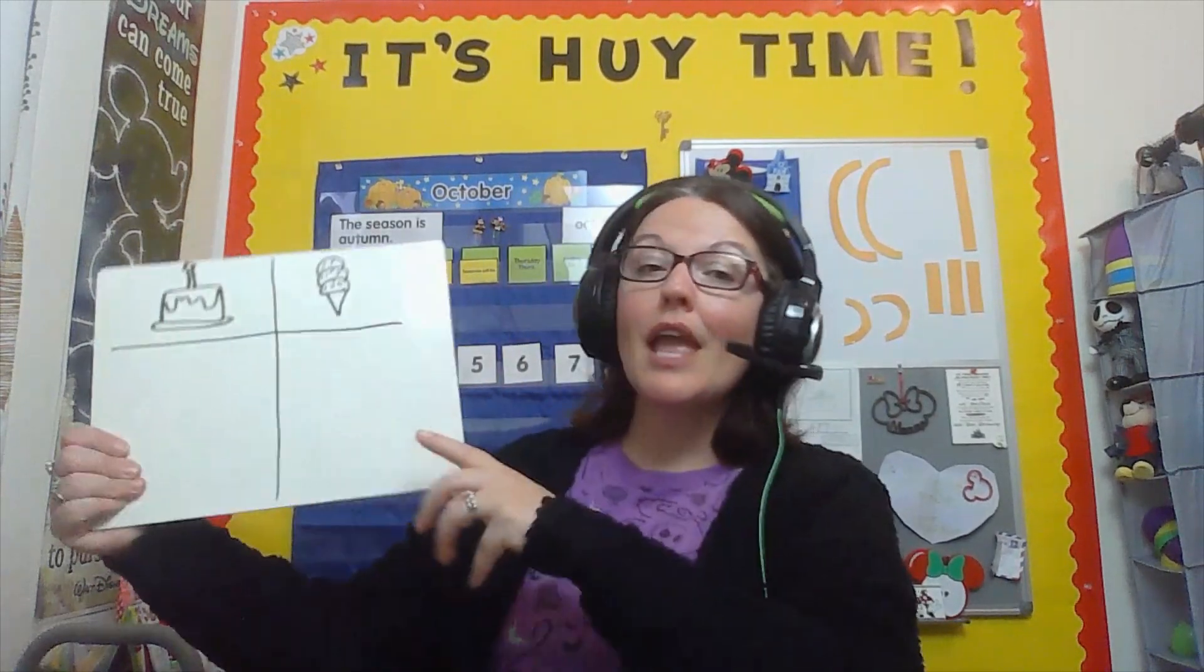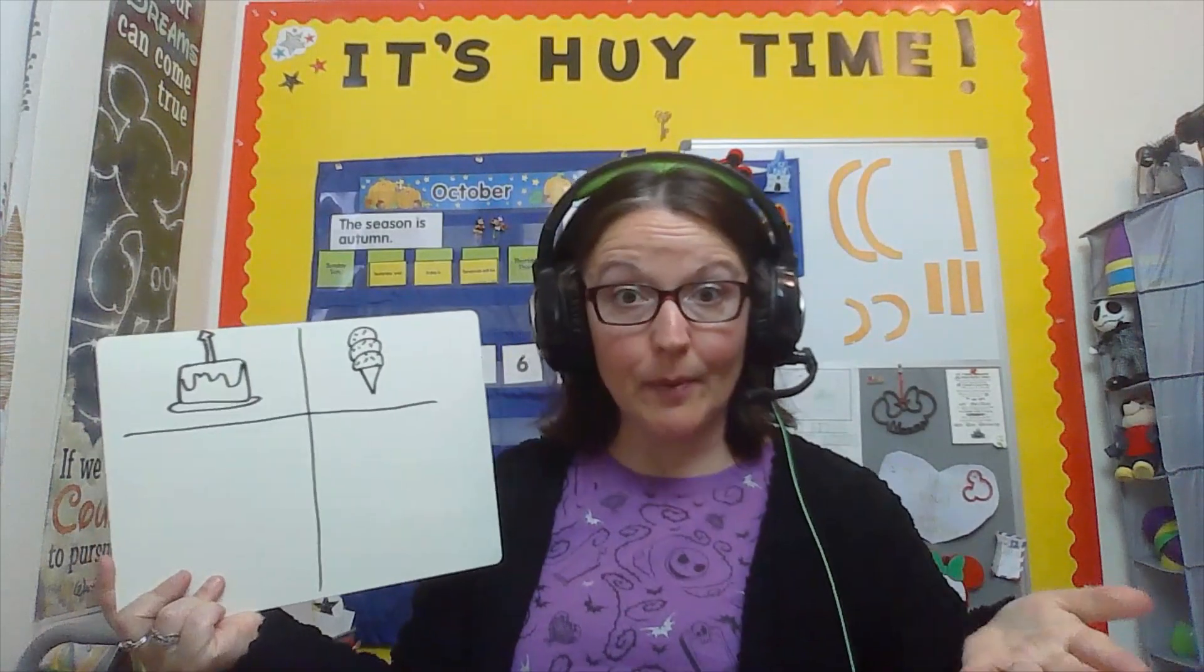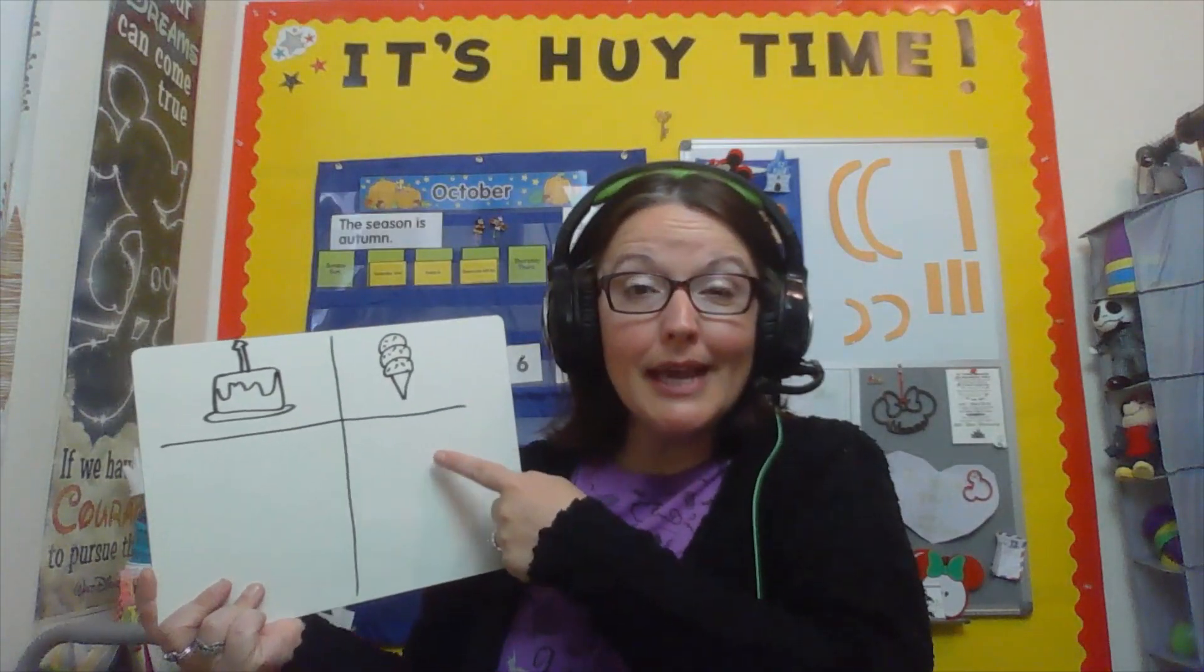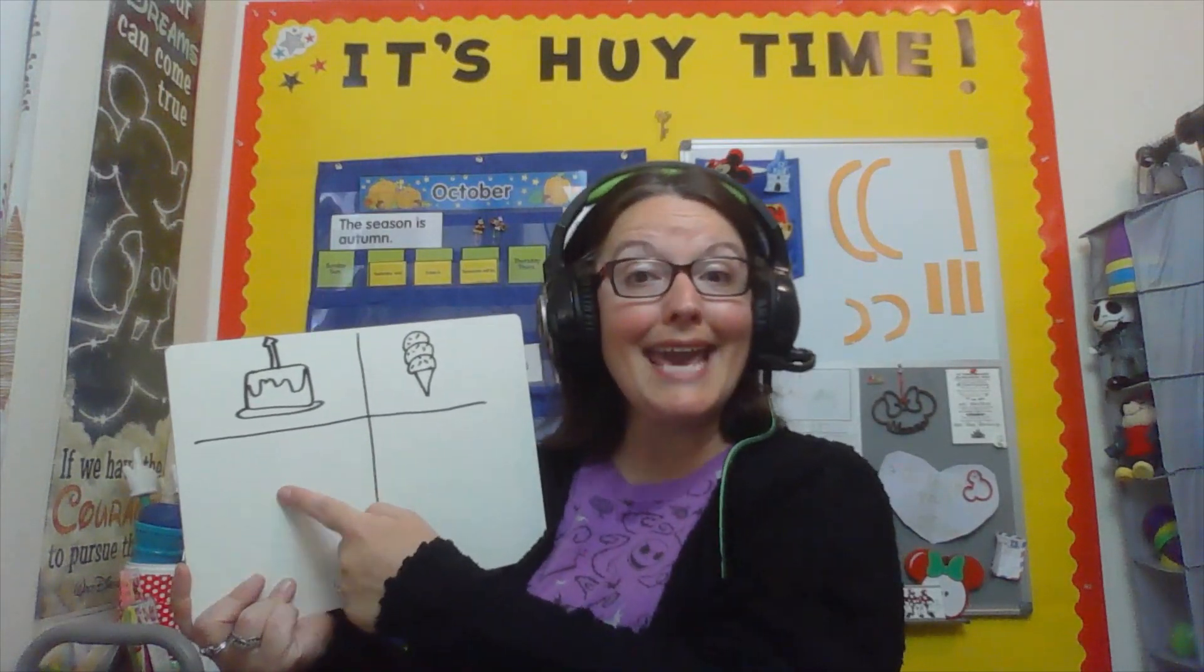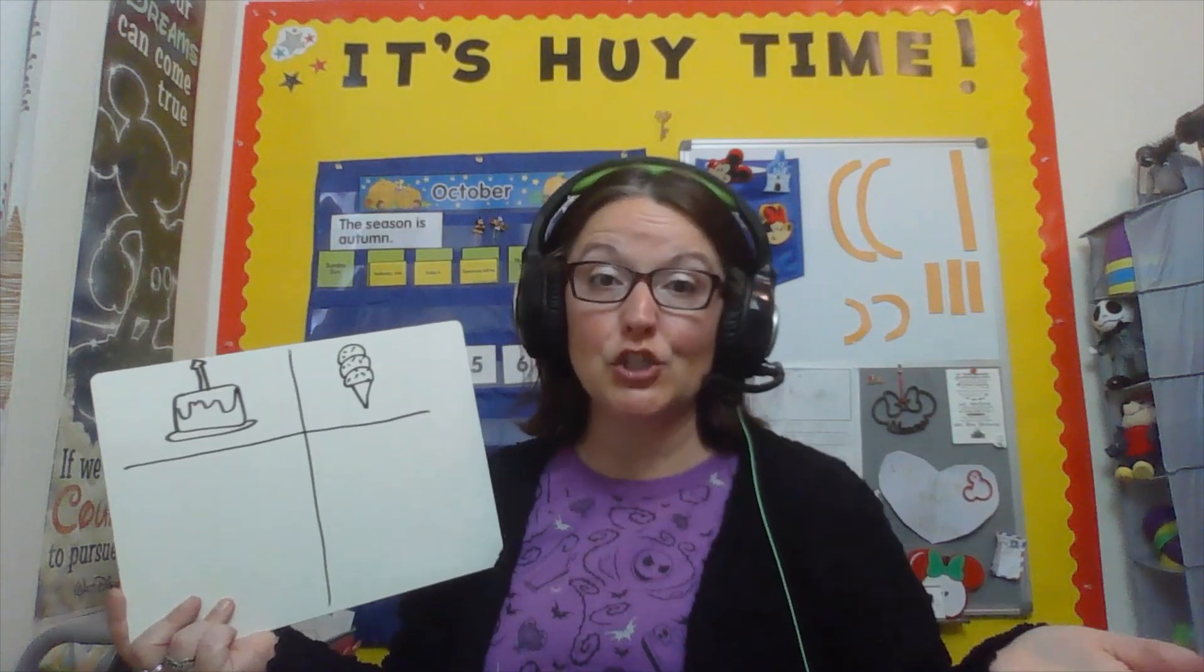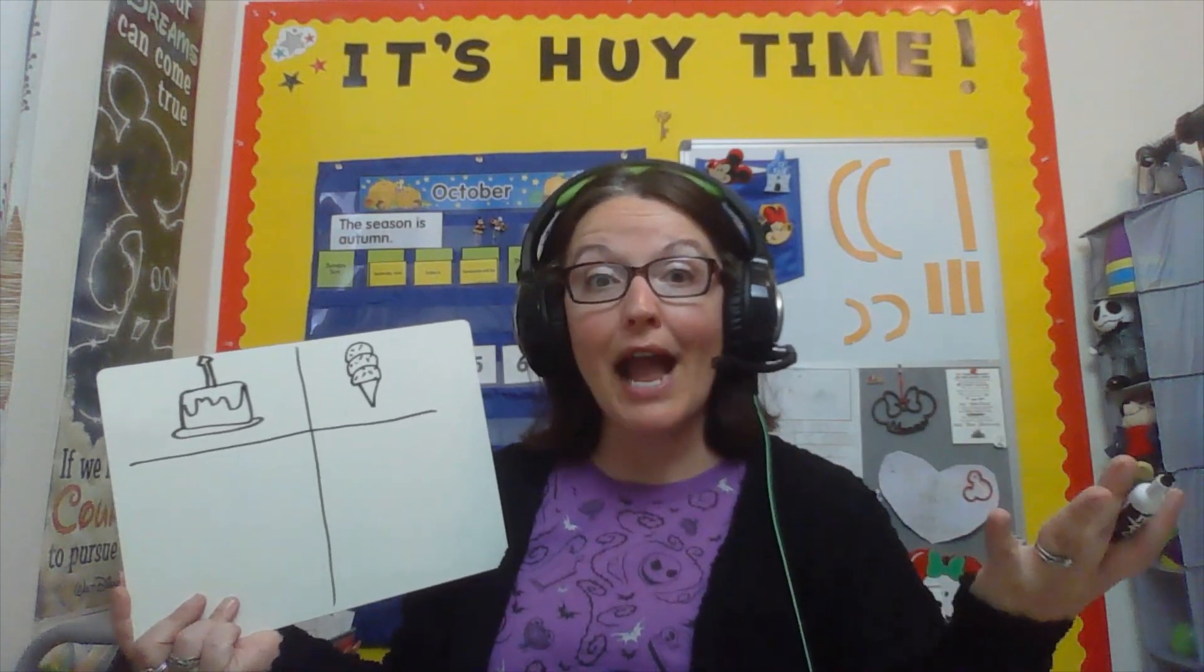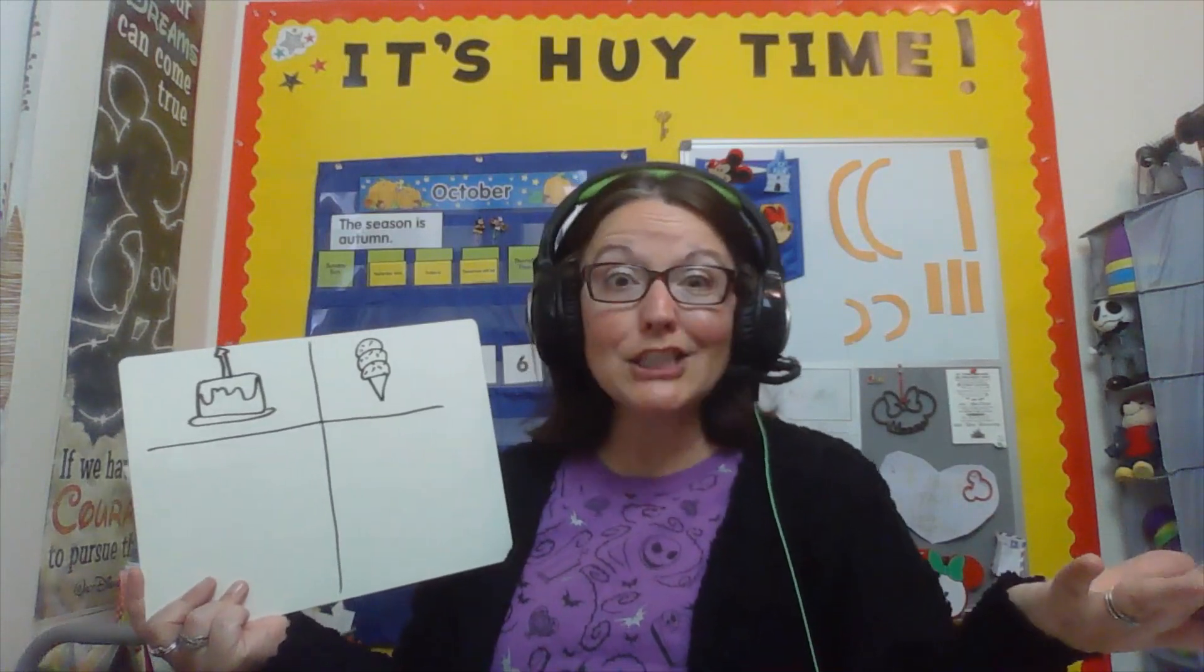Okay, today we are going to practice tally marks. You might be wondering, what in the world is a tally mark? It is just one line that helps you count. Like this, watch. If I'm having a birthday party and I need to count how many of my friends want ice cream and how many of my friends want cake, this is an easy way to do it. So if I count and I have three friends that want ice cream, I just make three lines.